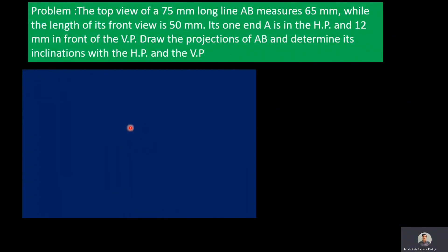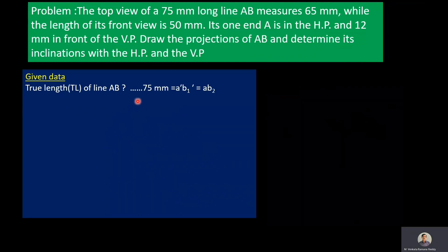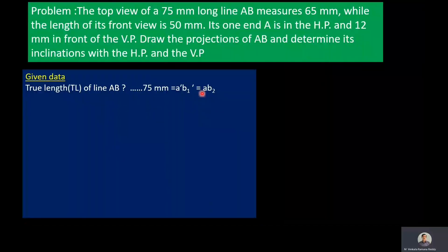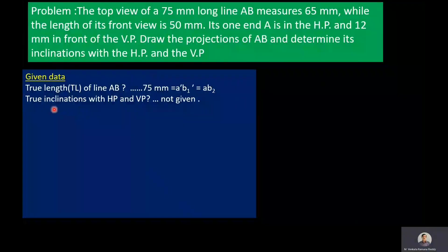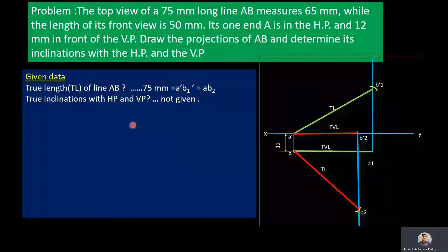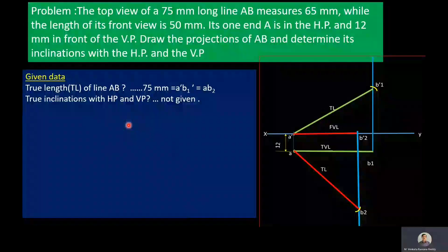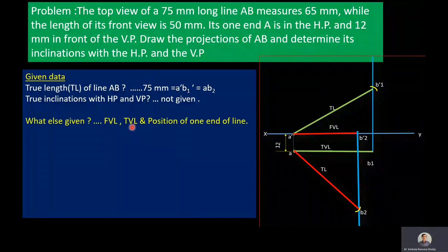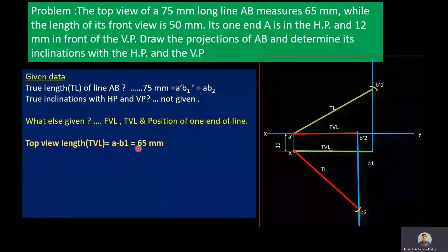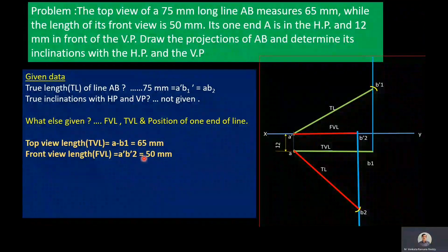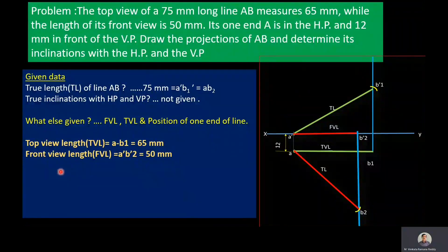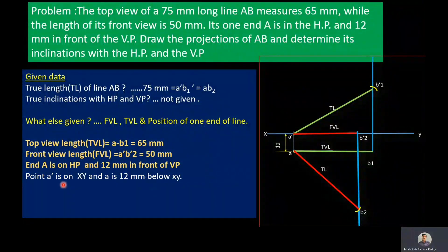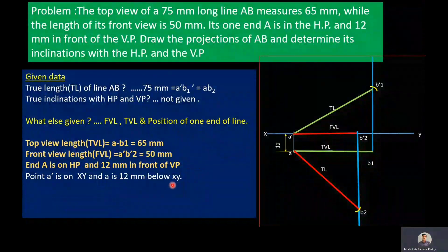We need to recollect the terminology used under projection of a straight line inclined to both planes. The true length of line AB is 75 mm. A'B1' is the true length in the front view, and AB2 is the true length in the top view. True inclinations with HP and VP are not given; instead, the apparent lengths are given — front view length A'B2' = 50 mm and top view length AB1 = 65 mm — along with the position of one end: A' is on XY and A is 12 mm below XY.